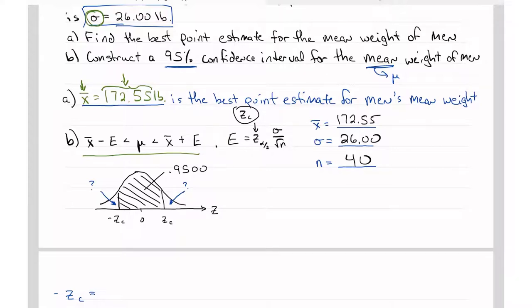So we've drawn our picture, and for Z sub C it will always be like this. The only thing that's going to change is this number here, and that's based on what confidence level we've been told. So the remaining is 1 minus 0.95, which is 0.05.